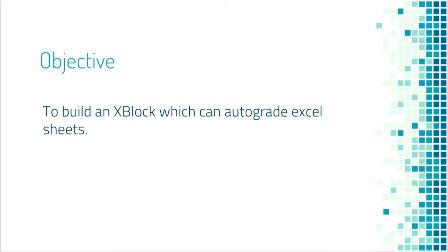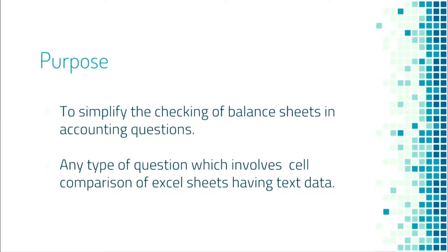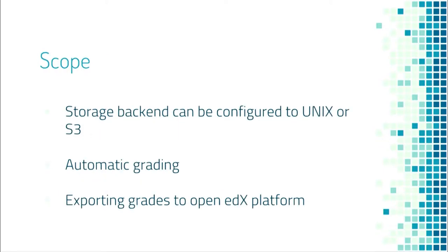Our objective is to build an XBlock that can autograde Excel sheets. Our main purpose is to simplify the checking of balance sheets in accounting questions. We are autograding the sheets by comparing the cells of the Excel sheets. It can be extended to any type of question involving cell comparisons with text data. We have configured our storage to two types — Unix and S3 — and we are doing automatic grading and exporting the grades to the Open edX platform for teachers to view.